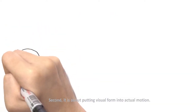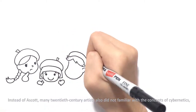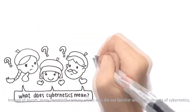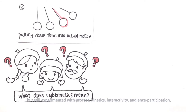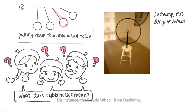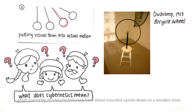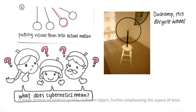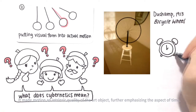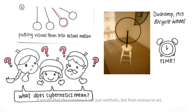Second, it is about putting visual form into actual motion. Instead of Ascott, many 20th century artists were actually not familiar with the concept of cybernetics. But still, they experimented with process, kinetics, interactivity, audience participation, duration, and environment, relying primarily on aesthetic tendencies to explain their work. For instance, the Bicycle Wheel by Duchamp, consisting of a bicycle fork with front wheel mounted upside down on a wooden stool, makes motion an intrinsic quality of the art object, further emphasizing the aspect of time. The result is that the outcome is not just aesthetics, but from science to art.